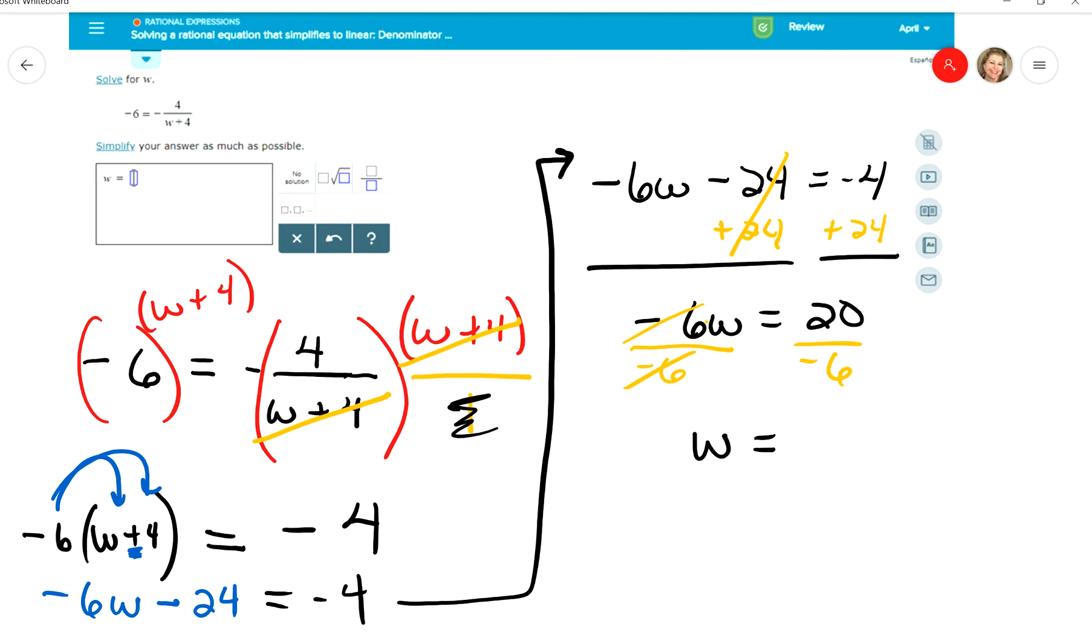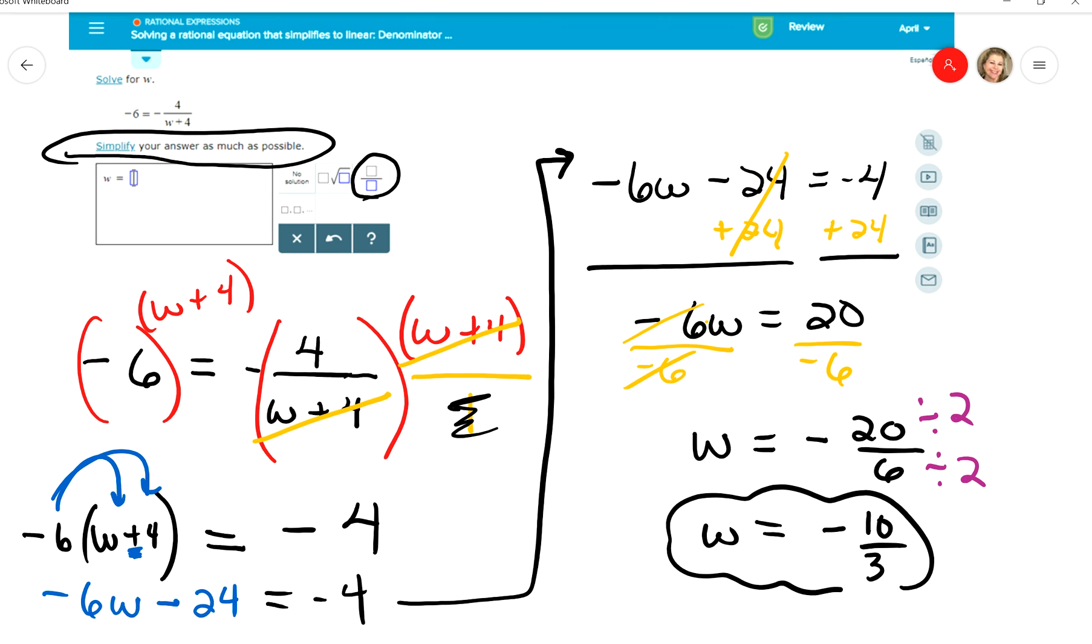And since 6 does not divide into 20 evenly, and over here it says simplify your answer as much as possible, and I can see in my little box here they've given me the fraction option, I'm just going to leave this as negative 20 over 6. But I do have to reduce it, and 20 and 6 are both divisible by 2. So I'll divide them both by 2 and get negative 10 over 3. And that's my answer for W.